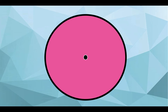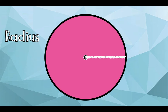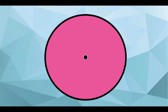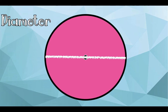Now, children, I want you to tell me what is the term of this point at the middle of the circle. Very good. That is the center. How about this one? What do we call this? Good job. This is the radius. How about this one? Very good, children. This is diameter.